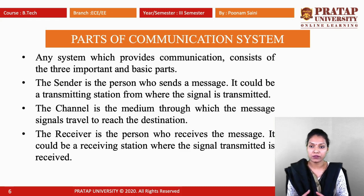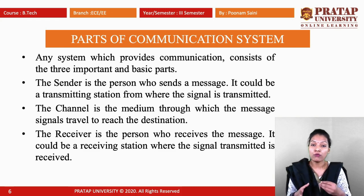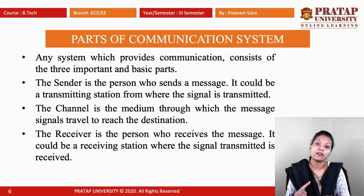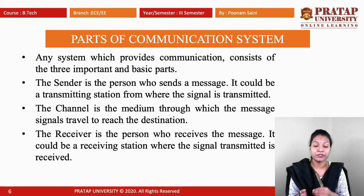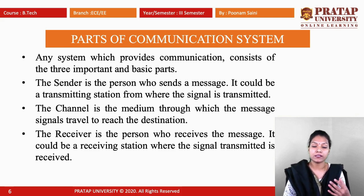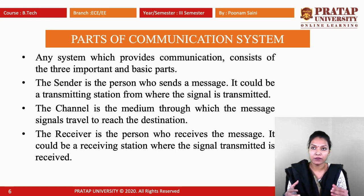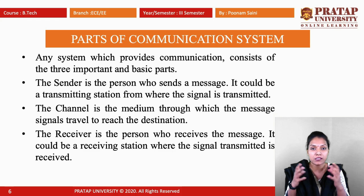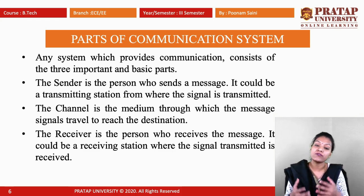Any system which provides communication consists of three important parts. The first is the sender — the person who sends a message or wants to give information. It could be a transmitting station from where the signal is transmitted, also called a transmitter. The channel is the medium through which the information or message is sent towards the receiver — any kind of medium like language, actions, gestures, or signs.